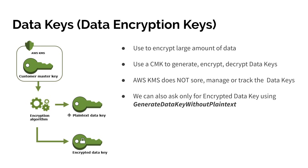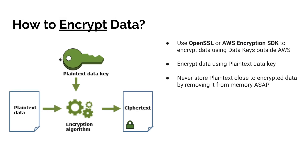You use the plain text data key to encrypt your large amount of data. As soon as you are done encrypting, you delete the plain text data key — because if you keep it alongside the encrypted data, anyone who finds it could easily decrypt the data. Instead, you store the encrypted version of the data key together with the ciphertext.